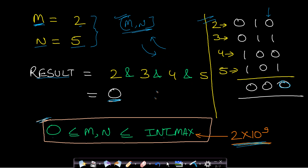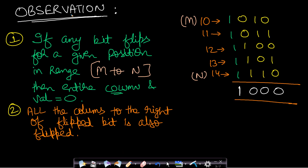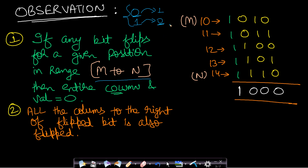The first observation is: if any bit flips for a given position in the range m to n, then the entire column AND value will be zero. This is obvious because if a bit flips in a column, it has been either zero-to-one or one-to-zero — in either case you encounter a zero in that column, making the entire column AND equal to zero.